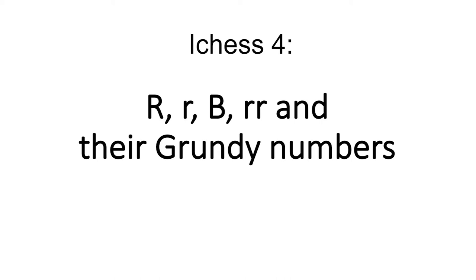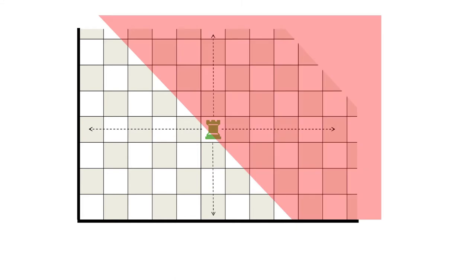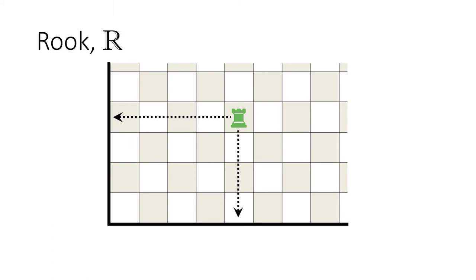The next chessman we consider is the impartial green rook. The conventional chess rook can move vertically or horizontally, any number of squares in any of four directions. But the diagonal play disables two of these directions, allowing him to move only westward or southward.